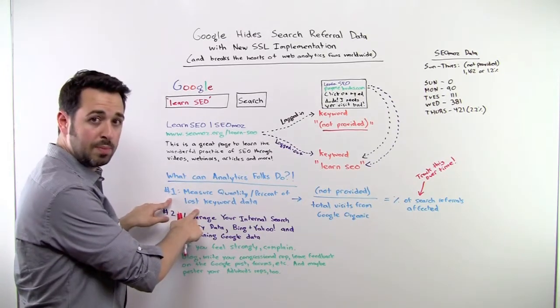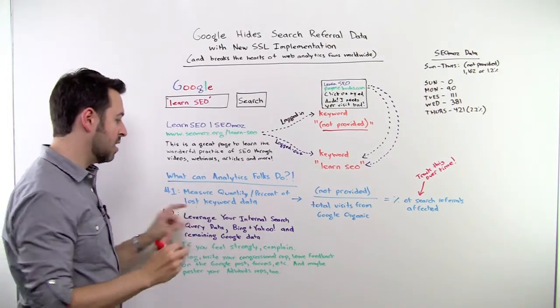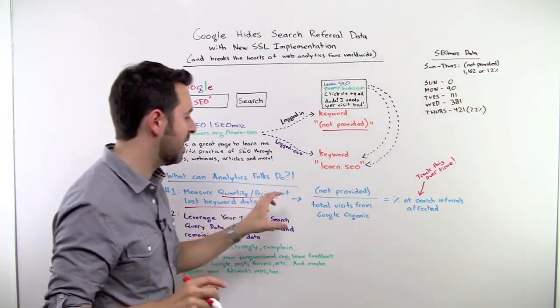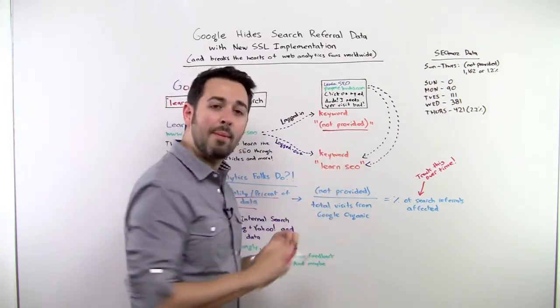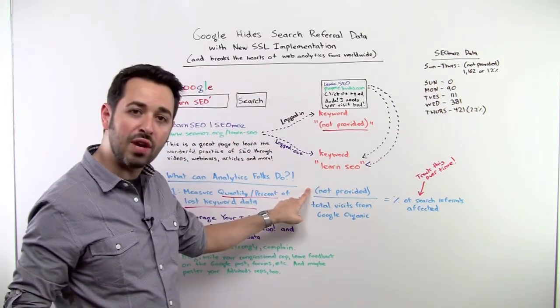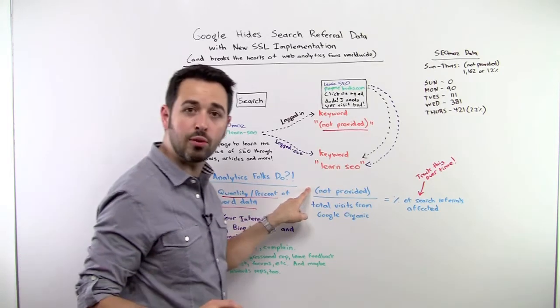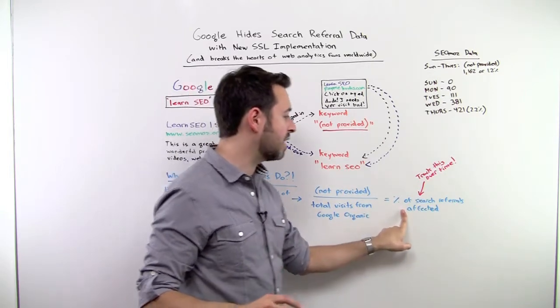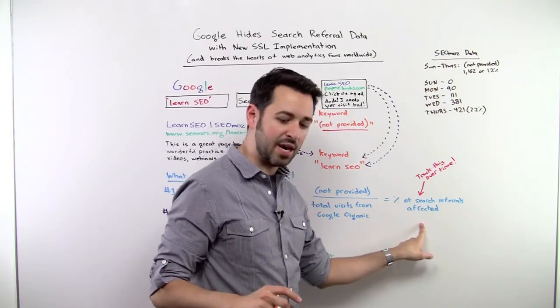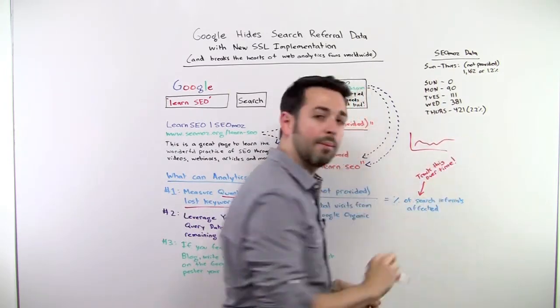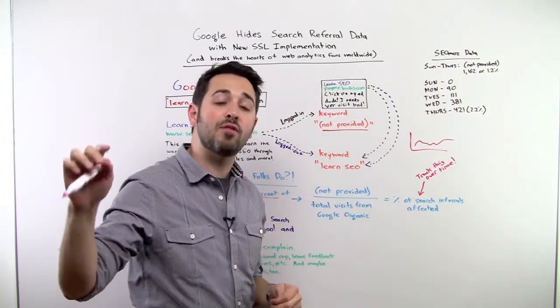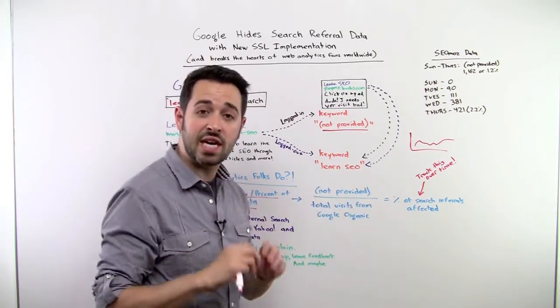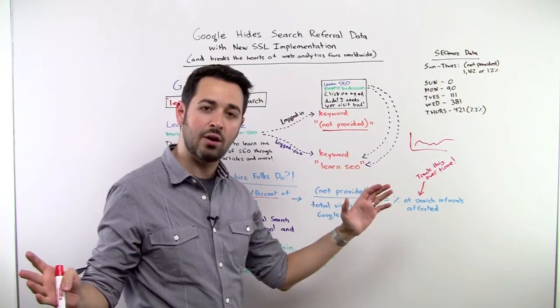There's a couple of things that I would recommend. First off, you should be measuring the quantity and percent of the lost keyword data. That is a very important metric that you're going to want to track over time. To do this, you simply go to your web analytics tool. You grab the number of not provided keywords or referrals that came to you, the visits that came to you. Divide that by your total visits from Google Organic and you will get the percent of search referrals affected by this. You want to track this over time because you want to know if that's going up, if more people who are logged into Google are searching and finding your site, what percent of data you're losing, whether this is going to be a big problem as Google rolls it out more broadly.